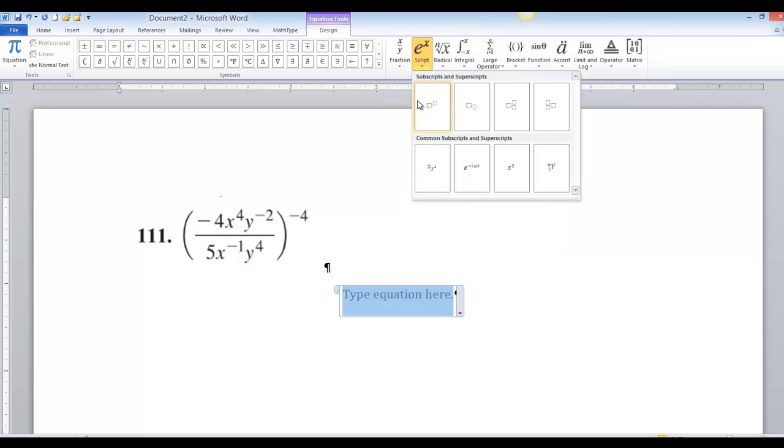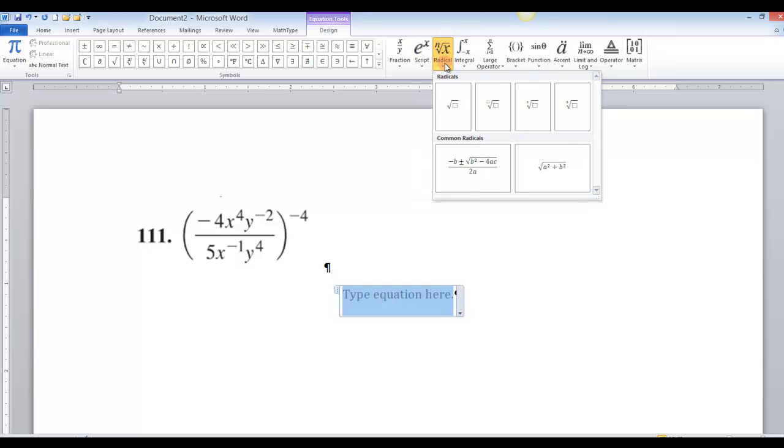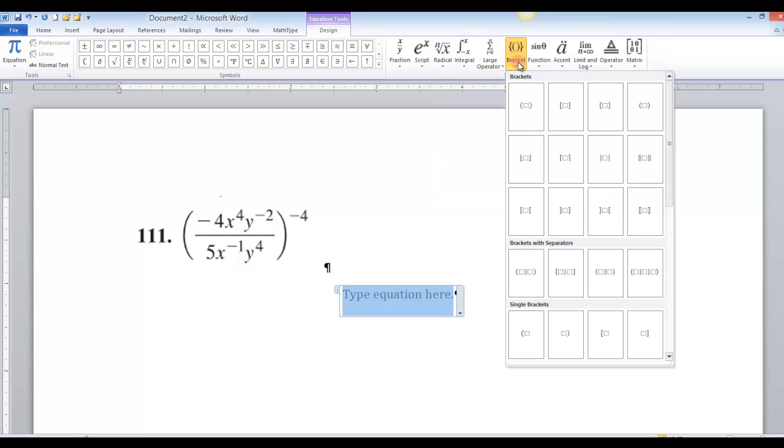And under the script you'll see the ability to write exponents with this one, or subscripts with this one, or mixed fractions with this one. Here you got radicals and all sorts of different things, different brackets over here.